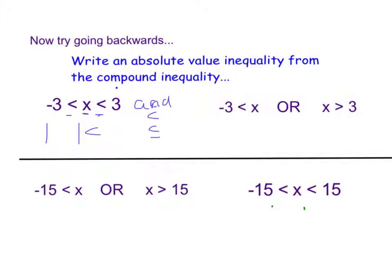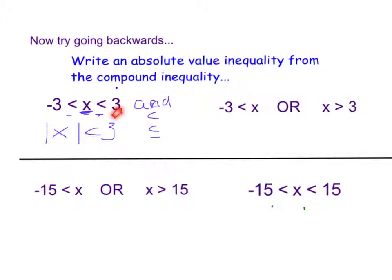Remember, we took whatever was in between there and dropped it in the absolute value. Before, when we were working forwards writing the compound inequality, we took whatever was in the absolute value and put it in between. Now we're taking whatever is in between and dropping it in the absolute value, and we're taking the positive answer. So negative three is less than x is less than three becomes the absolute value of x is less than three. The symbol stays the same and we use the positive — whatever's in between the two symbols goes inside the absolute value symbol.